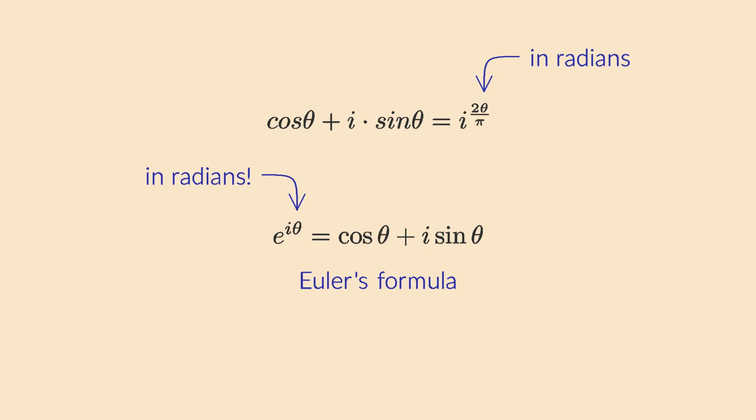If we plug an angle of pi radians into the formula, we get the famous relation between pi, e, i and minus 1. This is a popular choice for the most beautiful formula in math, because it combines so many fundamental constants in a totally unexpected way. Okay, the powers of i are very intuitive, but Euler's formula is not.